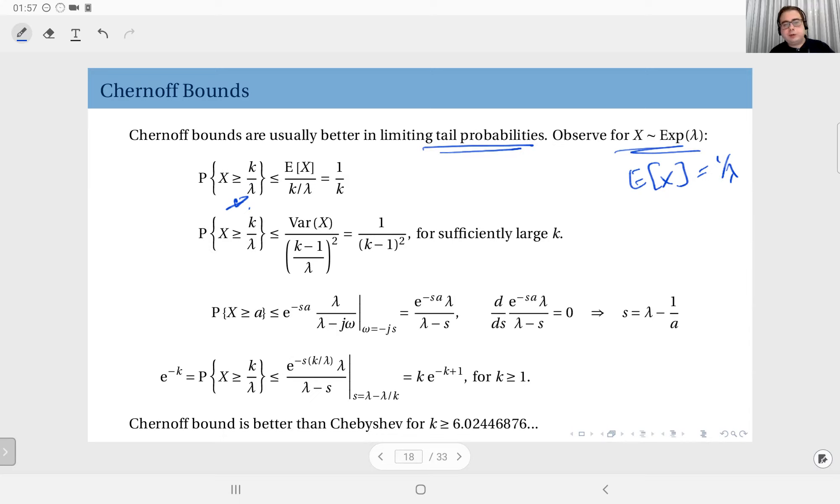We will first look at the Markov inequality. How good a bound can we get from Markov inequality? So, probability of X exceeding k over lambda. Well, X is a non-negative random variable. It's exponential. And k over lambda, assuming k is positive,